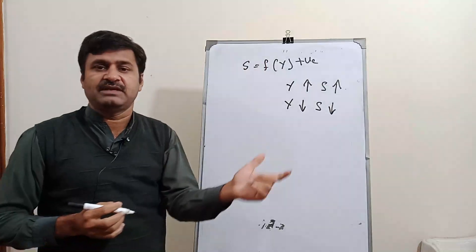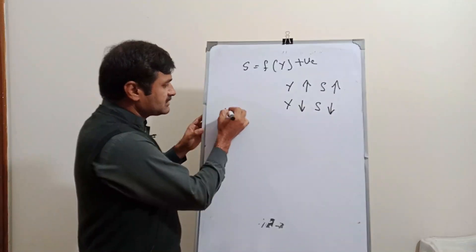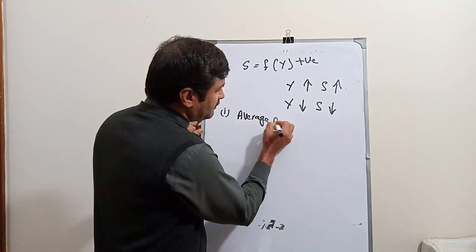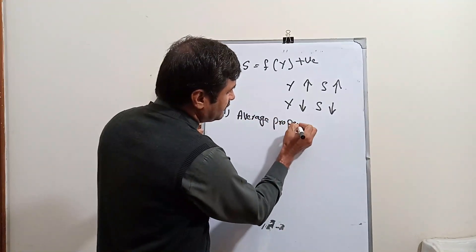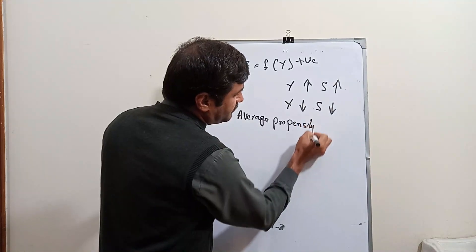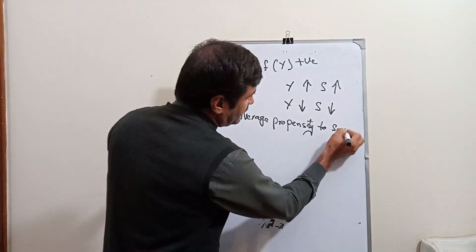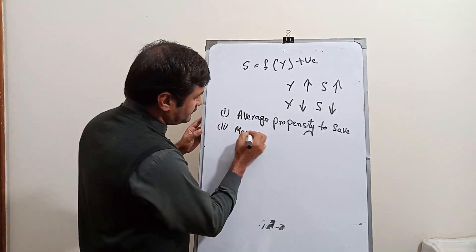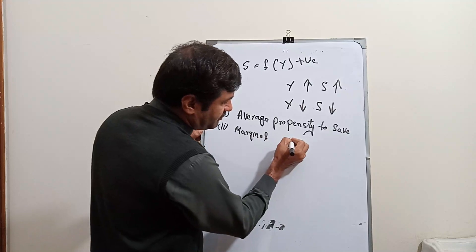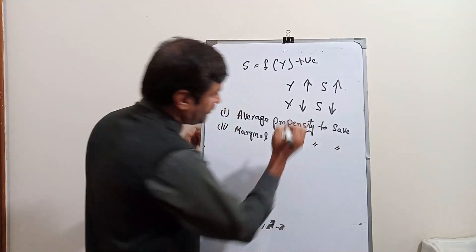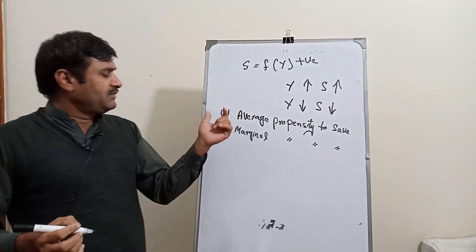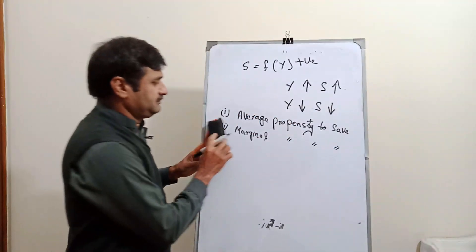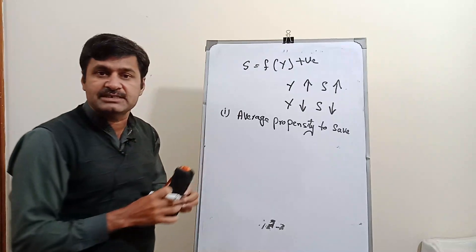There are two components of the saving function. The first is called average propensity to save, and the second is marginal propensity to save. First of all, we discuss about average propensity to save — its definition and formula.